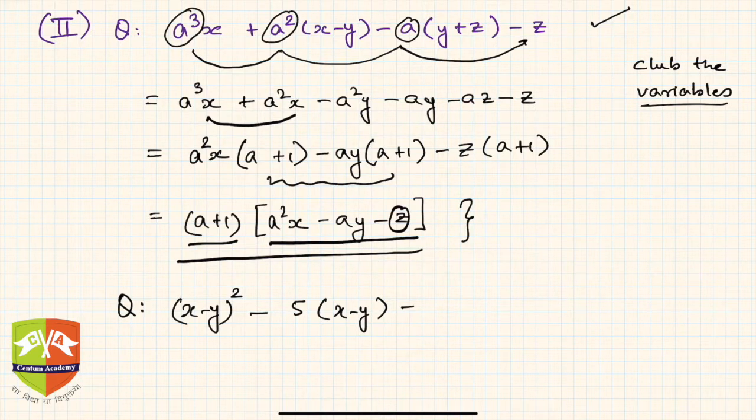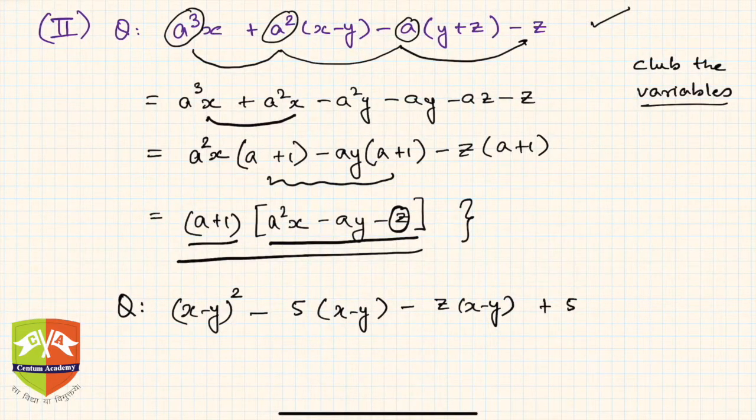minus z(x-y) + 5z. Now let's see if we can really factorize this. Again prima facie, it looks like the power of two is decreasing here, similar type of decrease of power here. Can we club these two together?